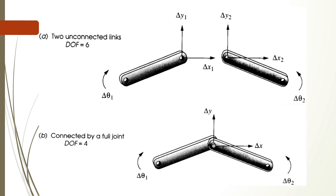Now if you connect these two links, delta-X1 and delta-X2 become a single delta-X, and delta-Y1 and delta-Y2 become a single delta-Y. So two degrees of freedom vanish. Initially we had six degrees of freedom, but when we connect with the help of a pin joint we get theta-1, theta-2, X, and Y — total four degrees of freedom.